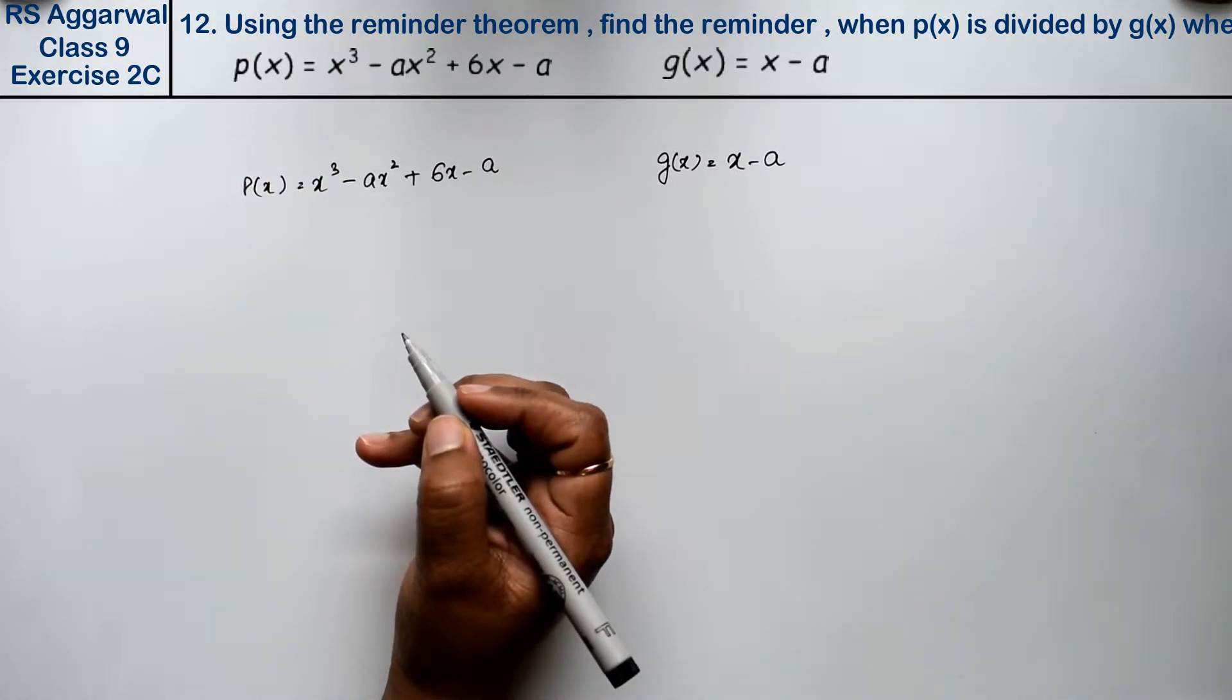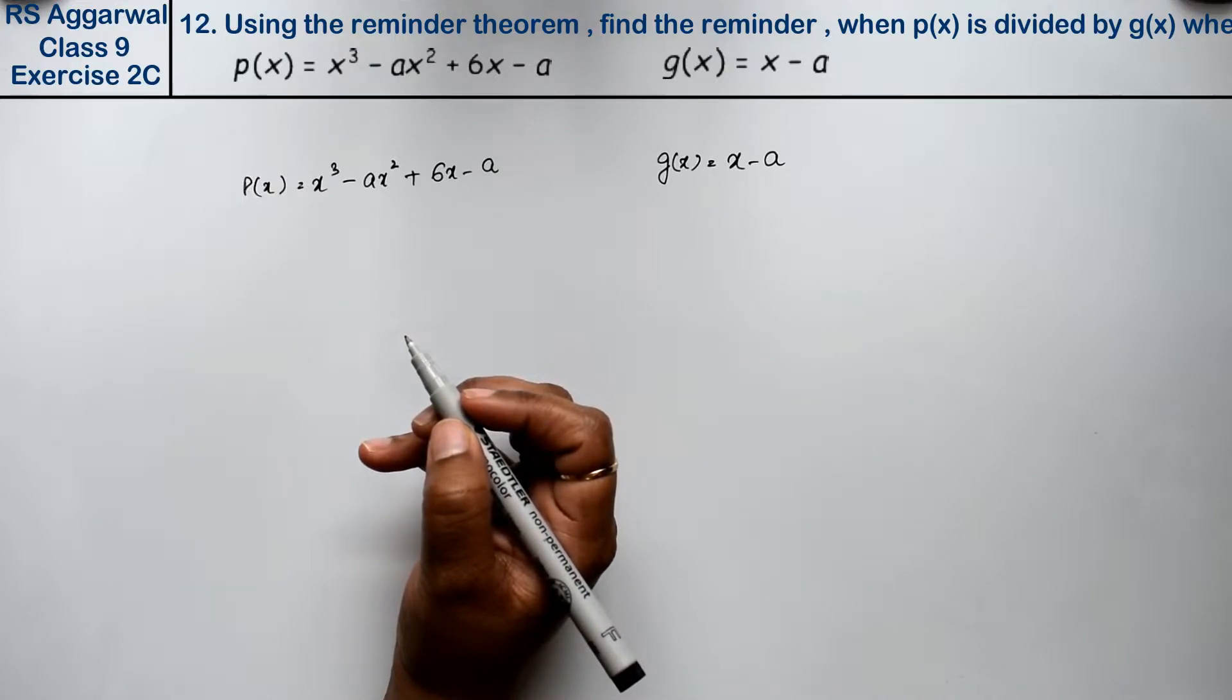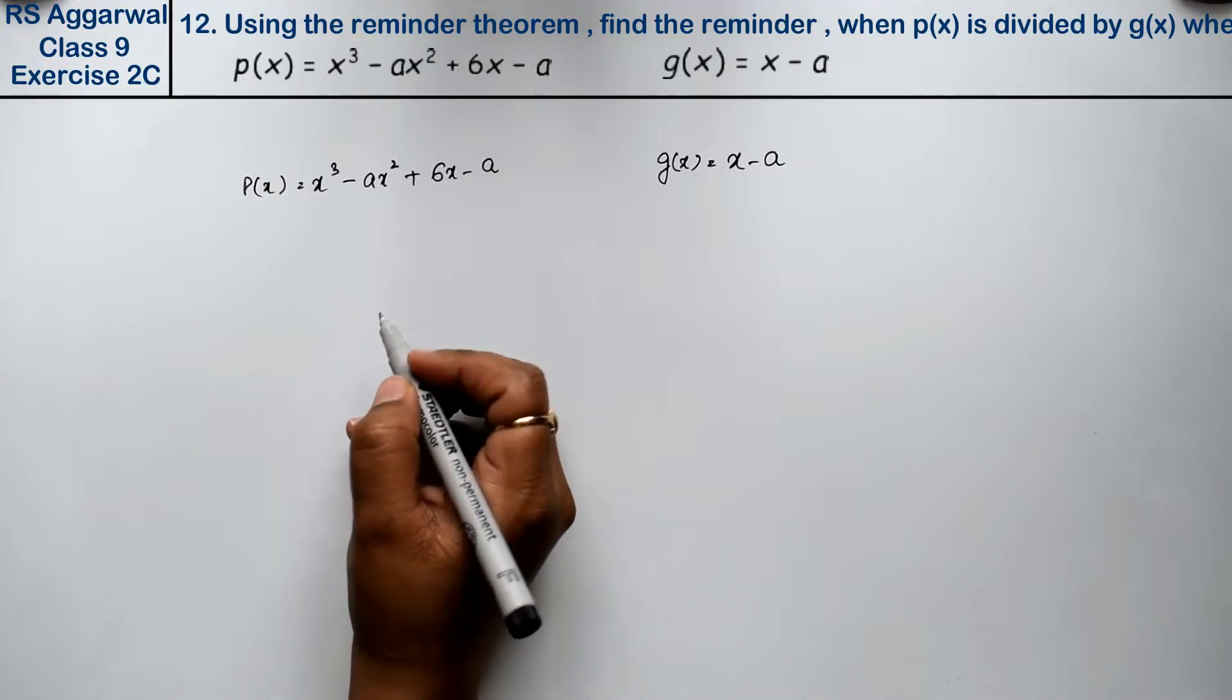Using the remainder theorem, find the remainder when p(x) is divided by g(x). Right, friends?